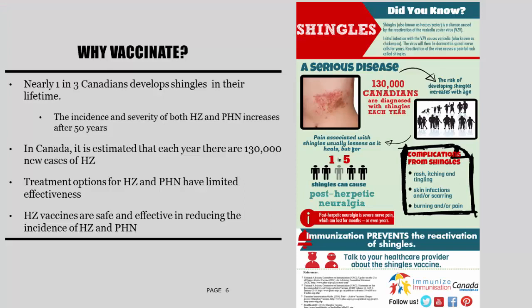Although herpes zoster immunization is not a routine or required vaccination, it is highly recommended. Although not everyone who has had chickenpox will develop shingles, almost one in three Canadians will develop shingles in their lifetime, with incidence and severity of both herpes zoster and post-herpetic neuralgia rapidly increasing after 50 years of age. Every year, there are approximately 130,000 new cases of shingles in Canada. However, treatment options for herpes zoster rash and post-herpetic neuralgia have limited effects. Instead, vaccination can provide a safe and effective alternative in preventing herpes zoster and its complications.